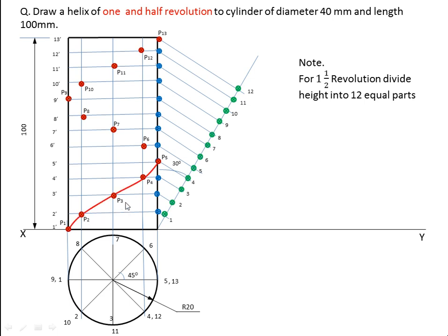Start drawing the curve with freehand. When the thread is at the front the portion is visible; when the thread goes to the back side of the cylinder it will be dotted. When it comes to the front side again it is visible. In this way we have completed this problem. Give the name to the curvature — that is 'Helix'.